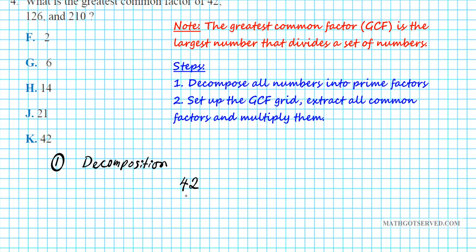Let's start with 42. The smallest prime that goes into 42 is 2. Two goes into 42, 21 times. Then 3 goes into 21, seven times. So the prime factor decomposition of 42 is 2 times 3 times 7 — this is the factor tree method.